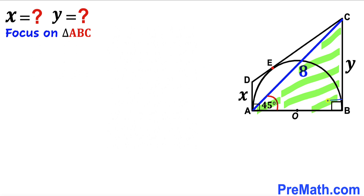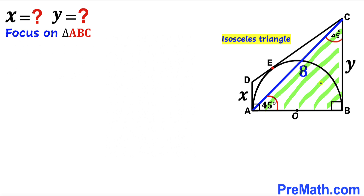We know this angle is 90 degrees and this angle is 45 degrees, so therefore this angle has to be 45 degrees as well, since the sum of the three interior angles must equal 180 degrees. Triangle ABC is an isosceles triangle since both base angles are 45 degrees, so side length BC equals side length AB.